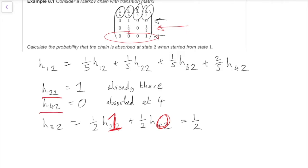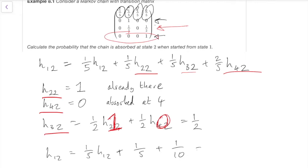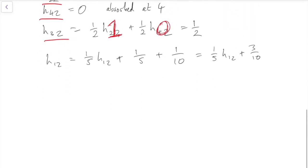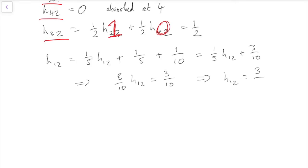Now we can substitute back into our equation for H(1,2): H(1,2) = 1/5·H(1,2) + 1/5·H(2,2) + 1/5·H(3,2) + 2/5·H(4,2). Substituting H(2,2)=1 gives 1/5, H(3,2)=1/2 gives 1/10, and H(4,2)=0 contributes nothing. So H(1,2) = 1/5·H(1,2) + 3/10, which means 4/5·H(1,2) = 3/10, and since 4/5 = 8/10, we get H(1,2) = 3/8.